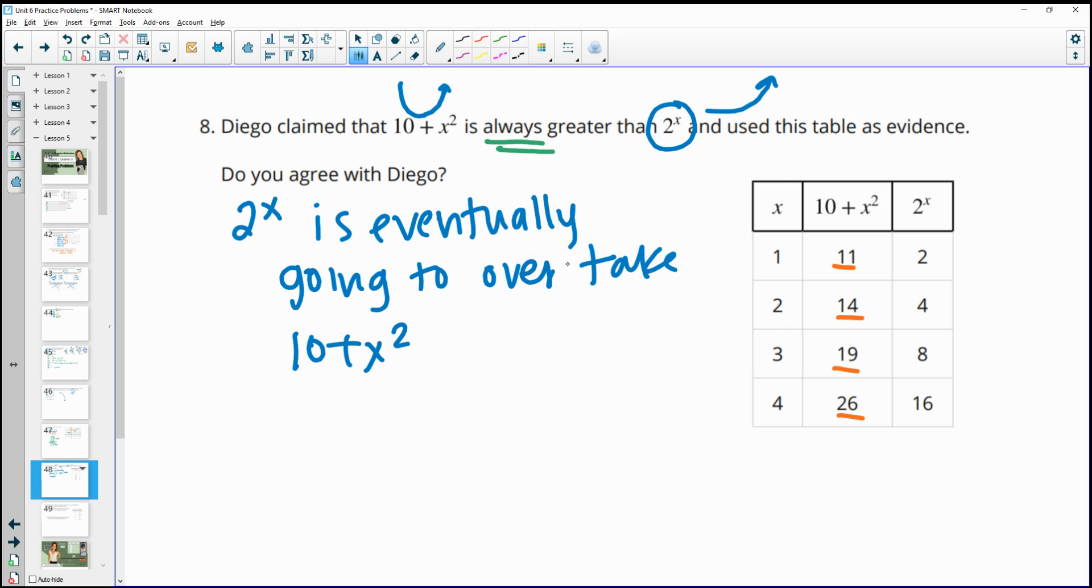We know 2 to the x is eventually going to overtake 10 plus x squared. So I'm just going to do an example. I'm just going to plug in 10. So 10 squared is 100, so 100 plus 10 is 110. And then 2 to the 10th power is 1024. So certainly 2 to the x is bigger at that value. So when x equals 10, 2 to the x is larger, and I showed it right there.